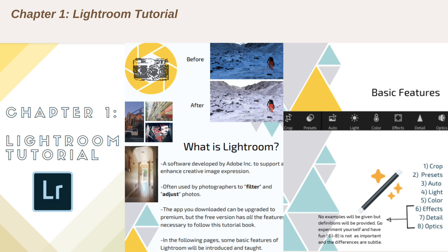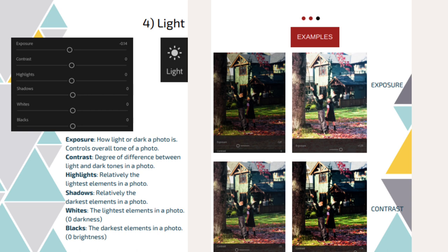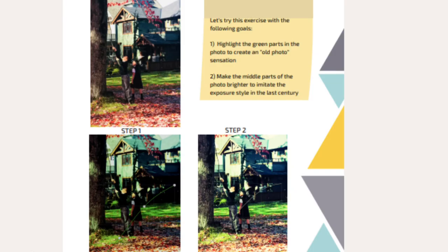For the sake of time, I'm only going to showcase how I formatted number four — Light — in this video. The way I explain these features is that I took a screenshot of the functions available and defined each term using simple vocabulary. Next, I give visual examples of what it would look like to adjust different functions, such as exposure or contrast, using one photo. Then I give a practice exercise on the next page. The yellow sticky note says to highlight the green parts in the photo to create an old photo sensation, and to make the middle parts of the photo brighter to imitate the exposure style in the last century. Under the sticky note are the solutions of how to achieve what I described.